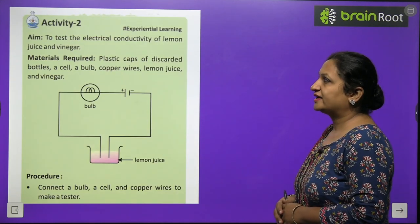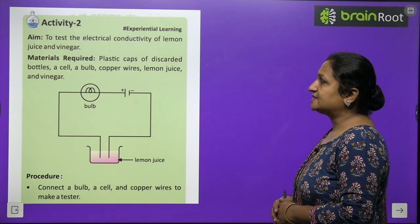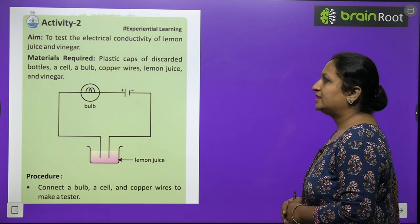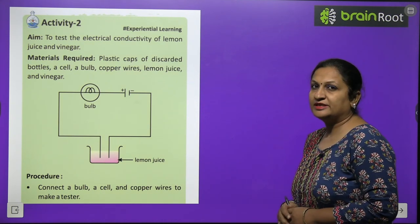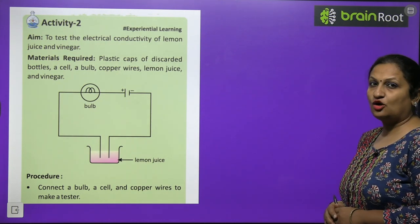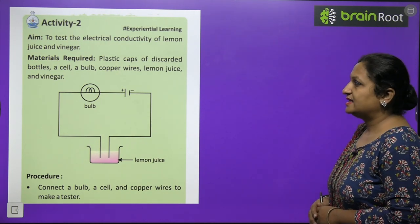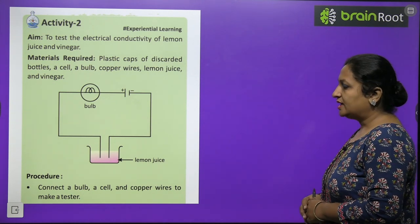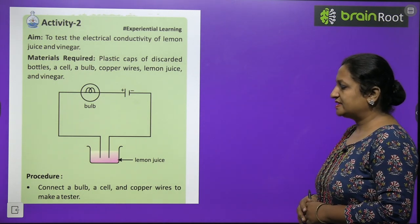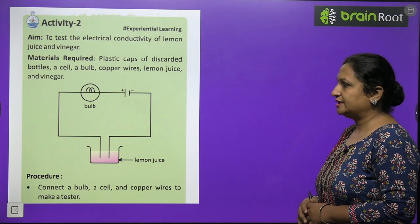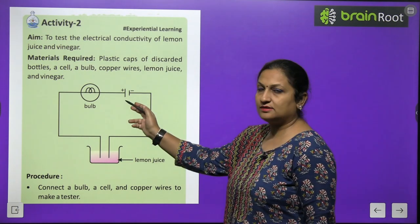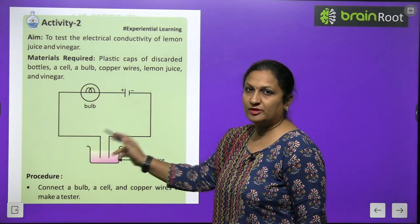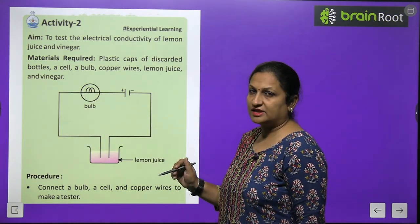Now have a look at Activity 2: to test the electrical conductivity of lemon juice and vinegar. For this, you will need plastic caps of discarded bottles, a cell, a bulb, copper wire, lemon juice, and vinegar. Connect a bulb, cell, and copper wire to make a tester. Connect one side to the cell and attach copper wire to the bulb end.